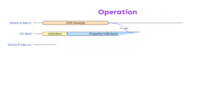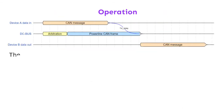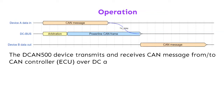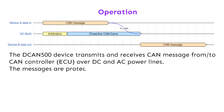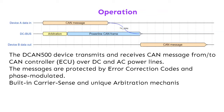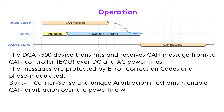Operation: The DCAN 500 transmits and receives CAN messages from and to the CAN controller over DC and AC powerlines. The messages are protected by error correction codes and phase modulated. Built-in carrier sense and a unique arbitration mechanism enable CAN arbitration over the powerline with multiple DCAN 500 nodes.